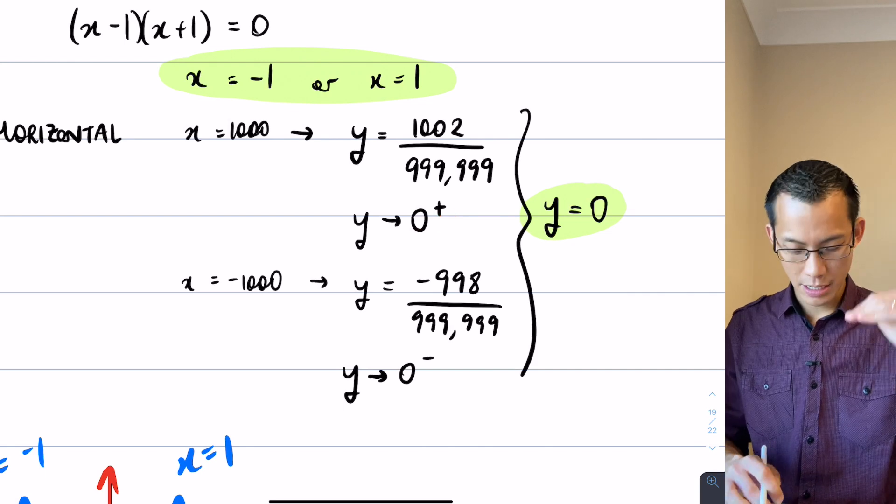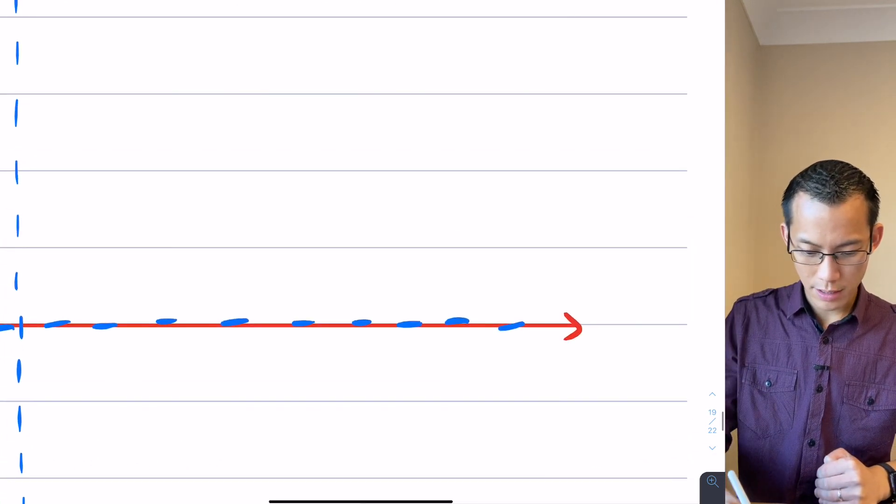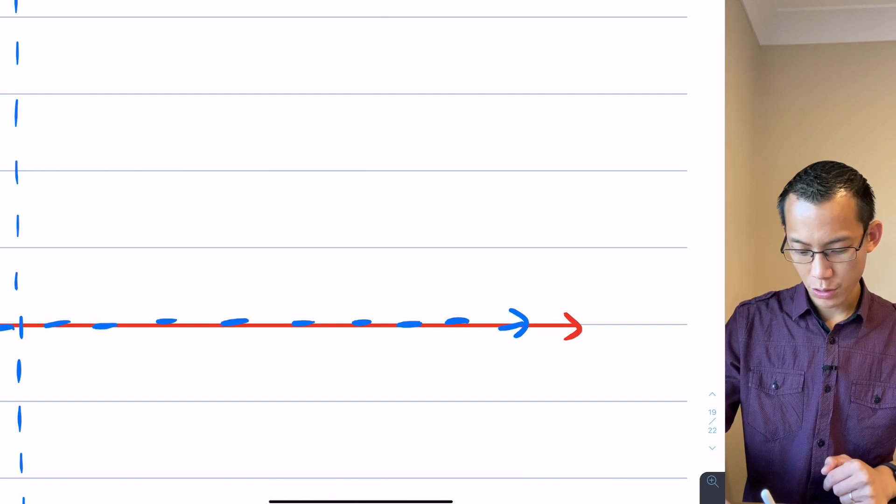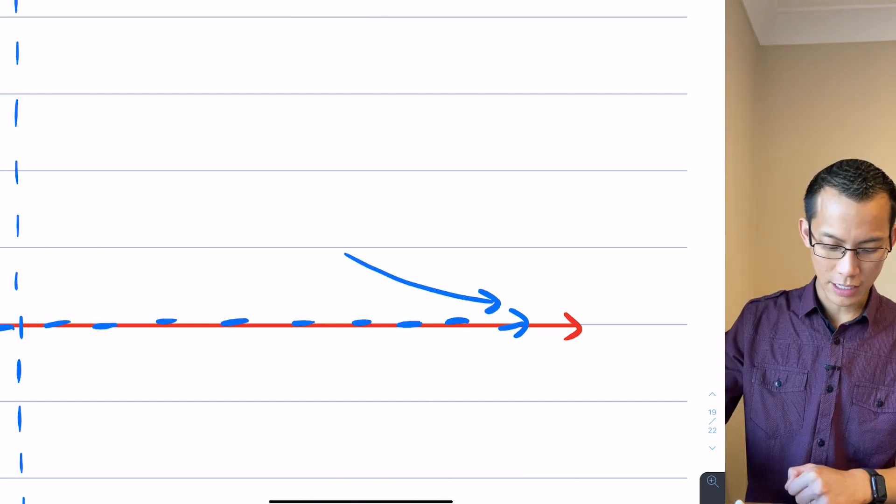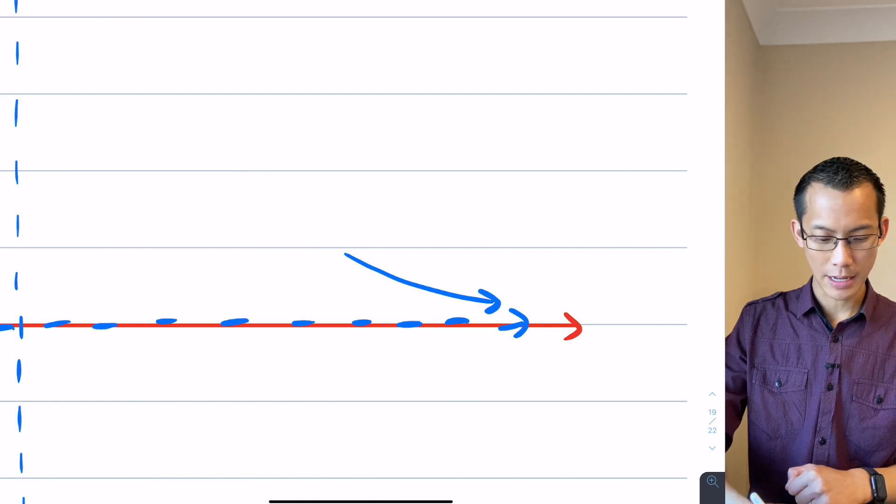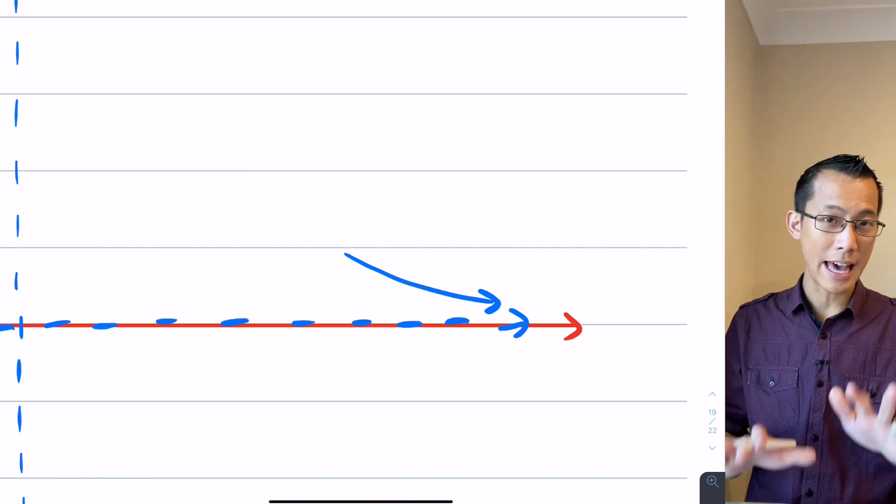Okay, so therefore what that tells me is, see here's the horizontal asymptote. I'm going to approach it but I'm going to do it from the top side like so. Okay, you can see if I continue this would go somewhere up like that. I don't know the rest of the information yet, but that'll do for now.